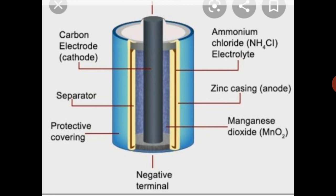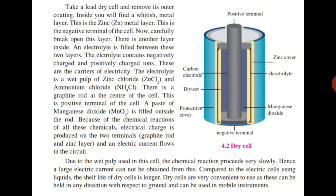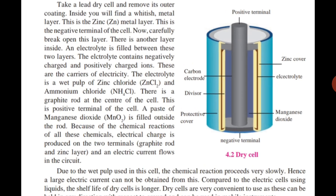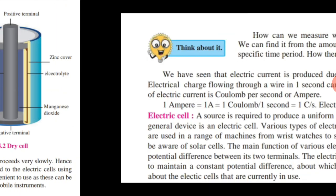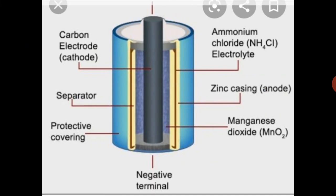Now we are going to see the next cell — the dry cell. Dry cells are used in our radio sets, wall clocks, and torches, and are available in three to four sizes. The construction of the dry cell is shown in the figure. I am going to explain that figure.